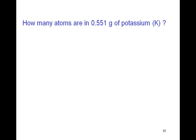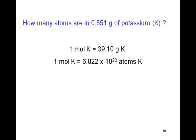Alright, so let's look at a problem. How many atoms are in 0.551 grams of potassium? Well, it turns out one mole of potassium has a mass of 39.10 grams, and remember that's the atomic mass measured in grams from the periodic table. One mole of potassium is also equal to 6.022 times 10 to the 23rd atoms of potassium. So by definition, that's a mole.